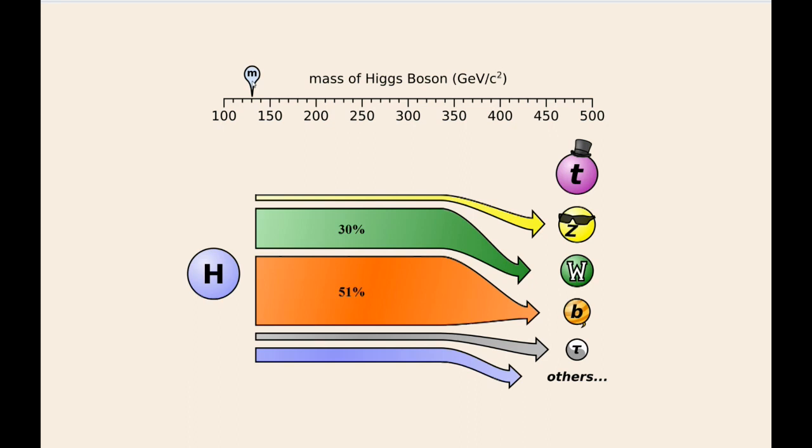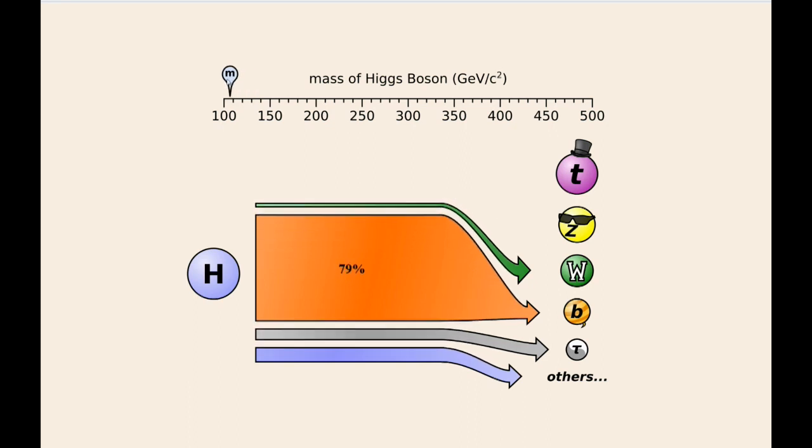For instance, if the mass is 100, we see that the Higgs boson will decay most likely into bottom quarks, with a smaller chance of tau leptons. The W boson is very unlikely.